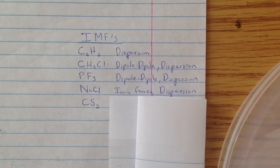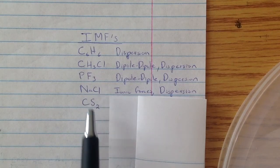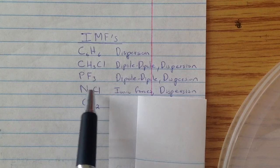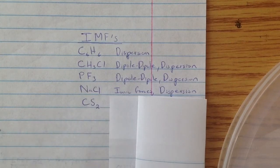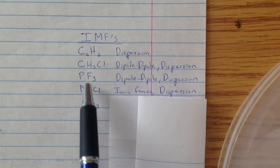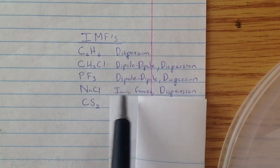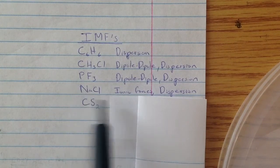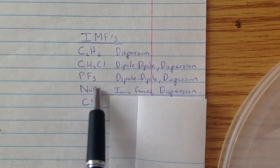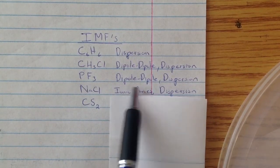Now, ionic forces can be ion-dipoles, meaning if this ion has a positive charge, and if you have a molecule such as water, which is polar, this ion with the positive charge can be attracted to the negative charge of the water, therefore creating an intermolecular force, and that would be called an ion-dipole force.